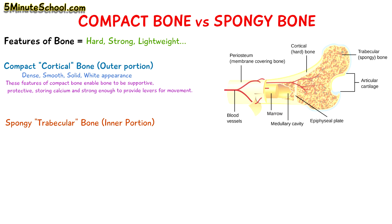Spongy bone is the internal tissue of bone and it's very porous, meaning it has holes which allow the movement of minerals and fluid through it. Because of this feature, more metabolic activity occurs within the spongy bone in comparison to compact bone, because molecules can pass within it easily.